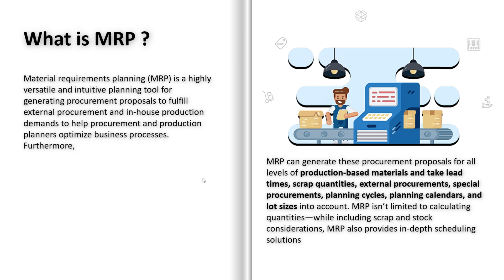The procurement team can convert the purchase requisition into a purchase order and send it to suppliers, while the production team can convert the planned order into a production order to begin manufacturing. By running MRP, we ensured that all materials arrived on time, production ran without delays, and customer orders were fulfilled successfully.